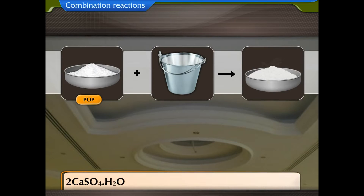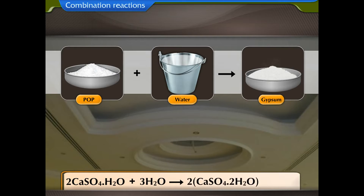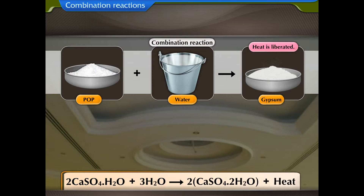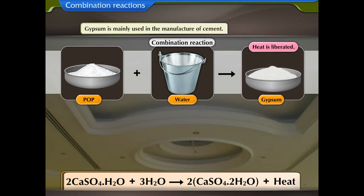POP, when mixed with water, sets into a hard mass called gypsum. During this reaction, heat is liberated — this is a combination reaction. Gypsum is mainly used in the manufacture of cement.